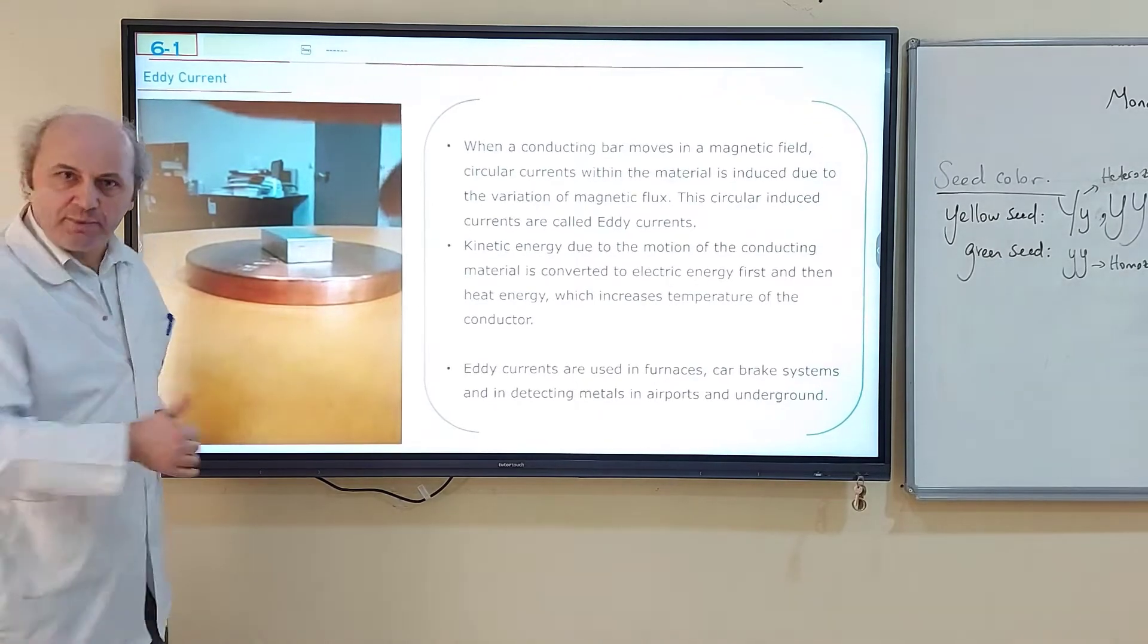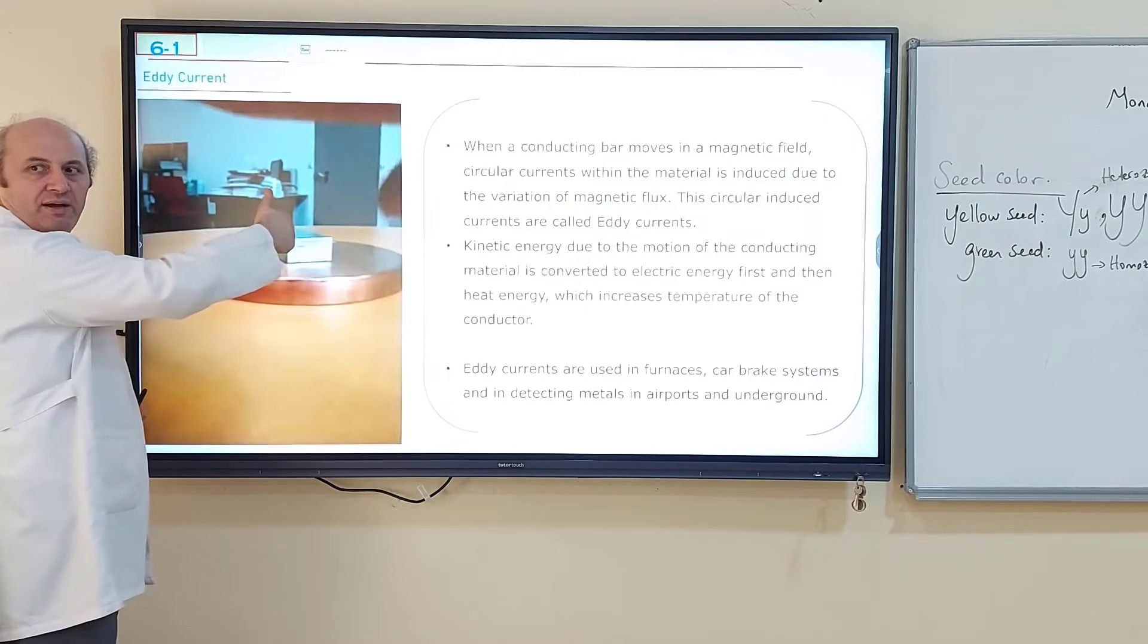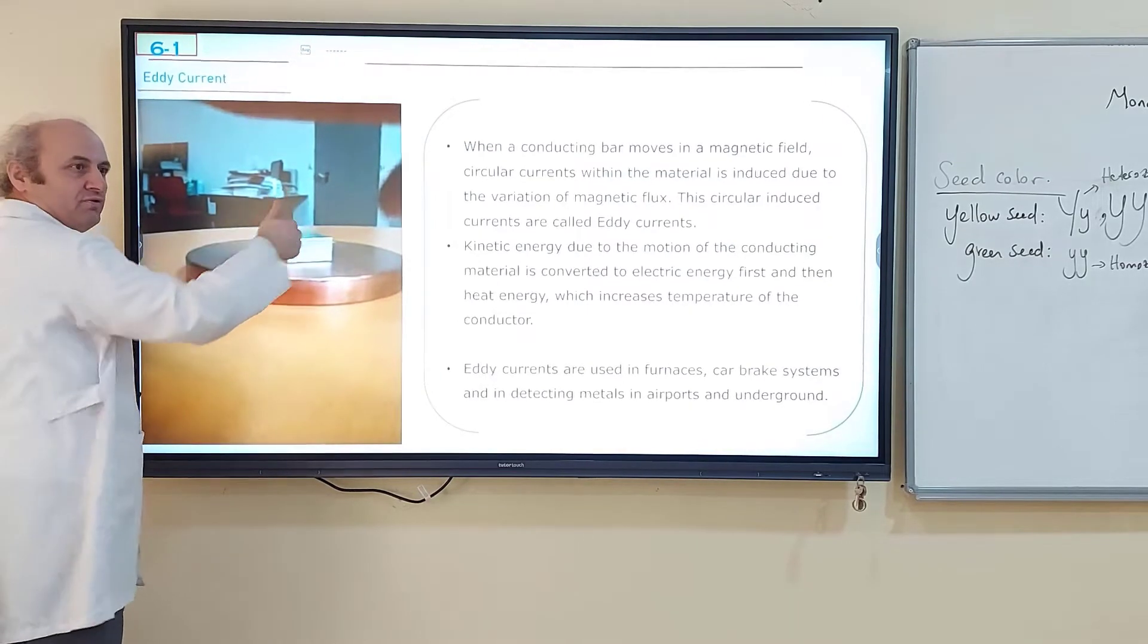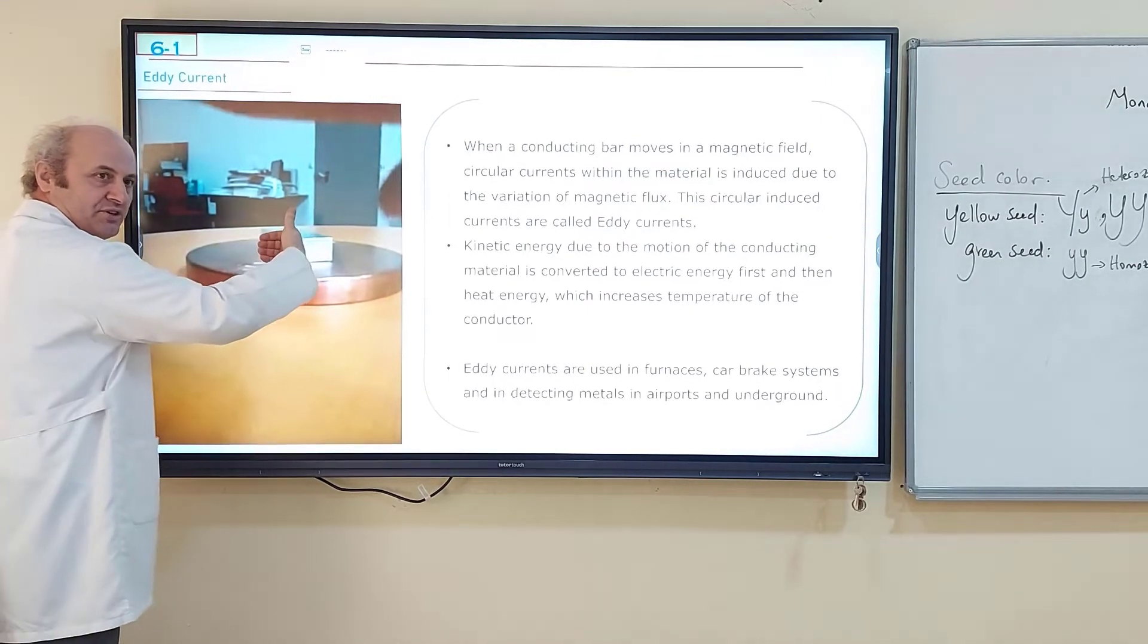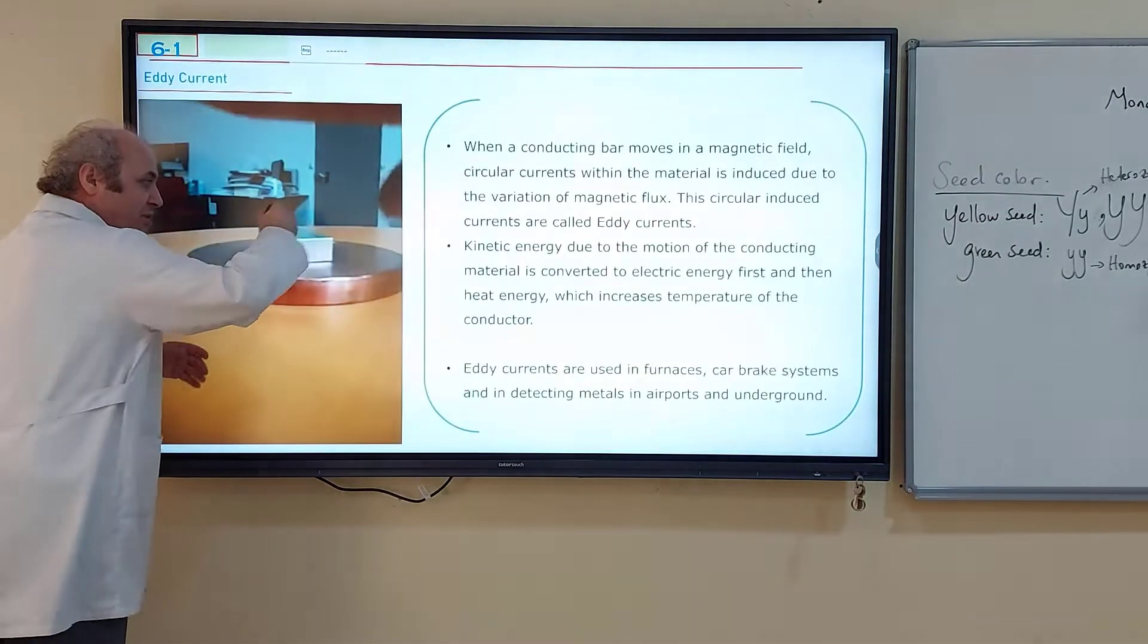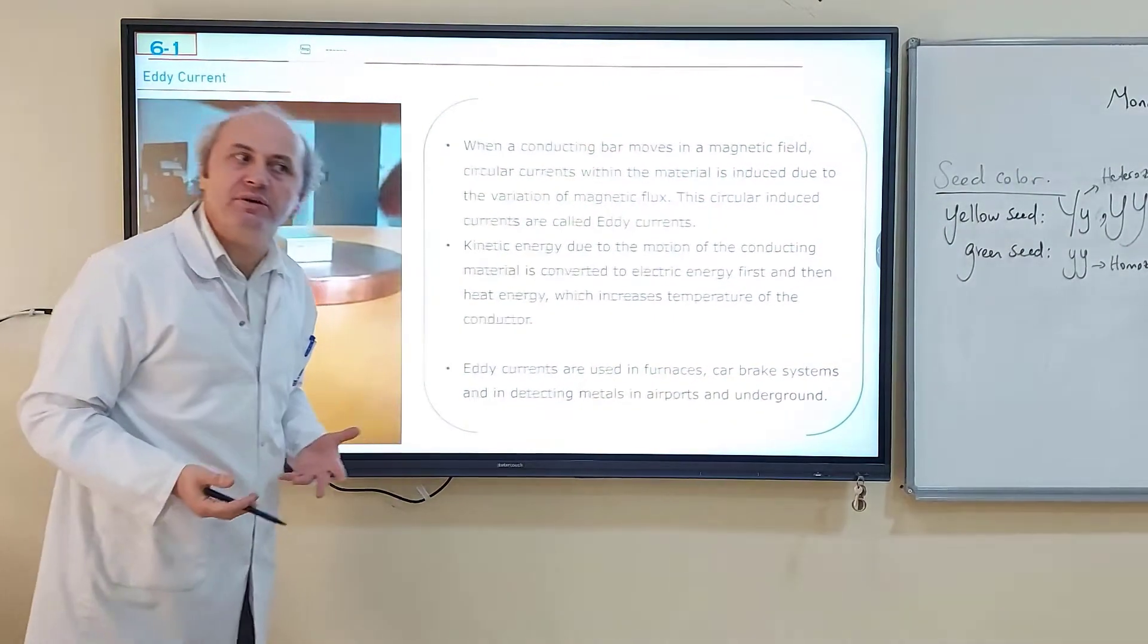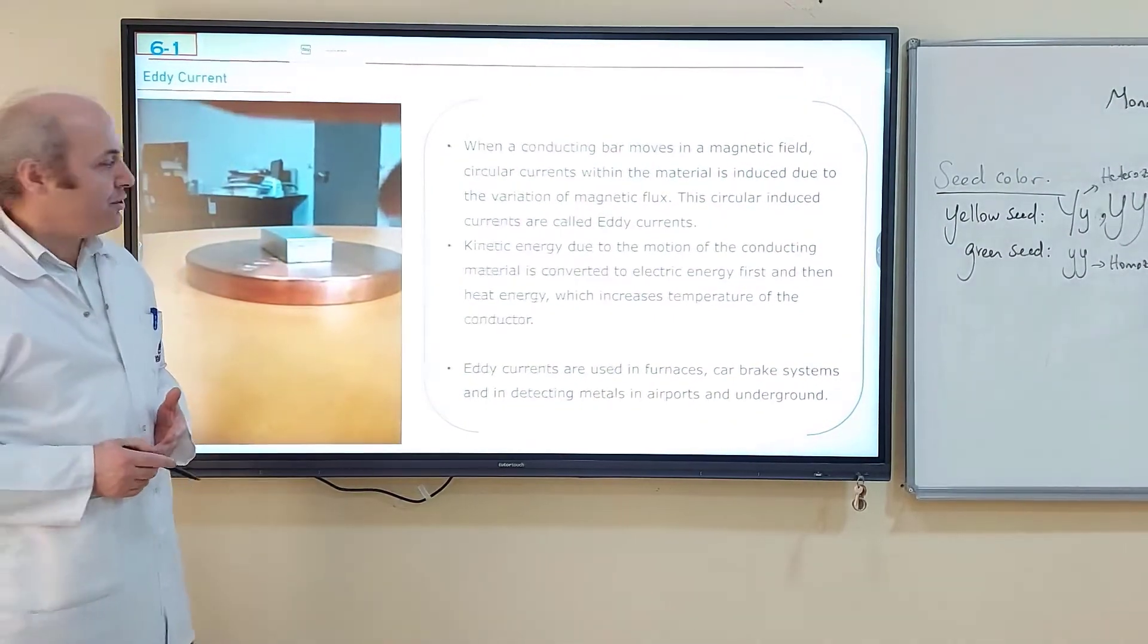Why circular? Because magnetic field must be, if say N pole is approaching, it must be upward, the magnetic field. So by right hand rule fingers, electric current direction, it's going to be a circle. There will be circular currents on the surface of the copper block. These circular swirling currents are called eddy currents.